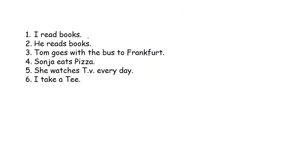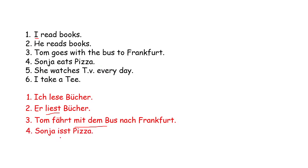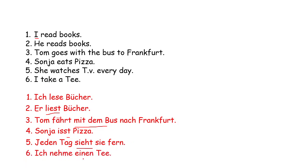Let's see some translations. 'I read books' — with ich we add -e only, so: Ich lese Bücher. 'He reads books' — lesen is an irregular verb, so 'e' changes to 'ie': Er liest Bücher. 'Tom goes with the bus to Frankfurt' — Tom fährt mit dem Bus nach Frankfurt. 'Sonia eats pizza' — Sonia isst Pizza. 'She watches TV every day' — Sie sieht jeden Tag fern. 'I take a tea' — Ich nehme einen Tee.